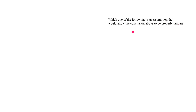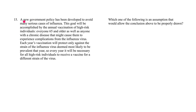Let's take a look at the argument. A new government policy has been developed to avoid many serious cases of influenza. The goal will be accomplished by the annual vaccination of high-risk individuals. Who are high-risk individuals? Everyone 65 and older, as well as anyone with a chronic disease that might cause them to experience complications from the influenza virus.